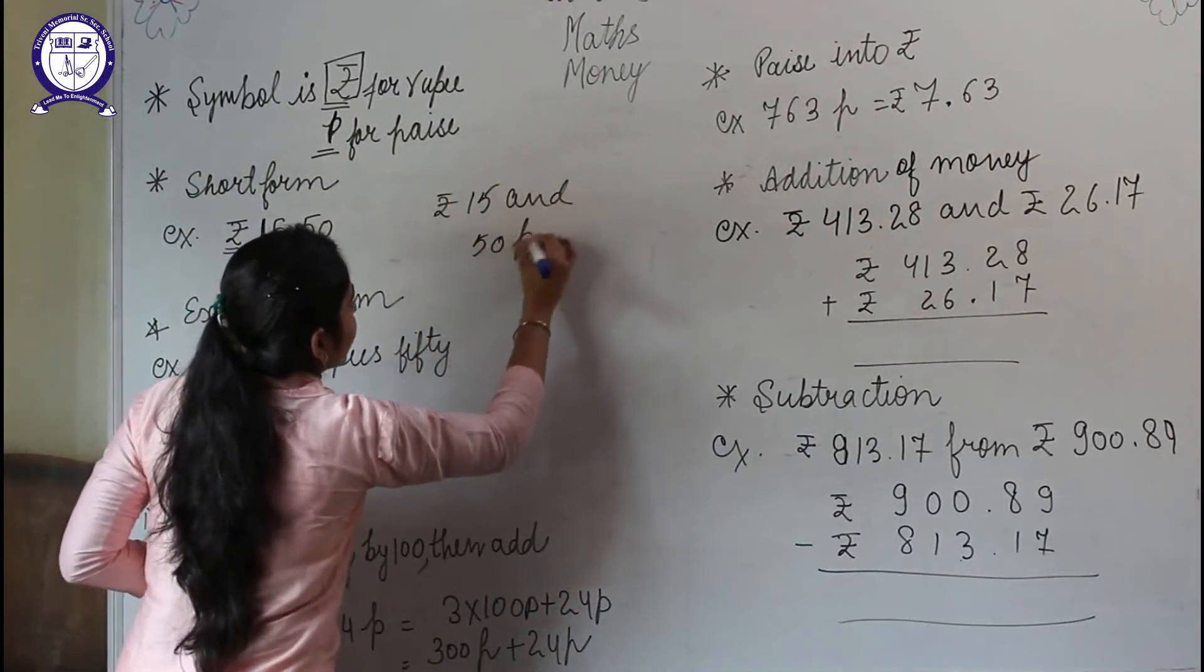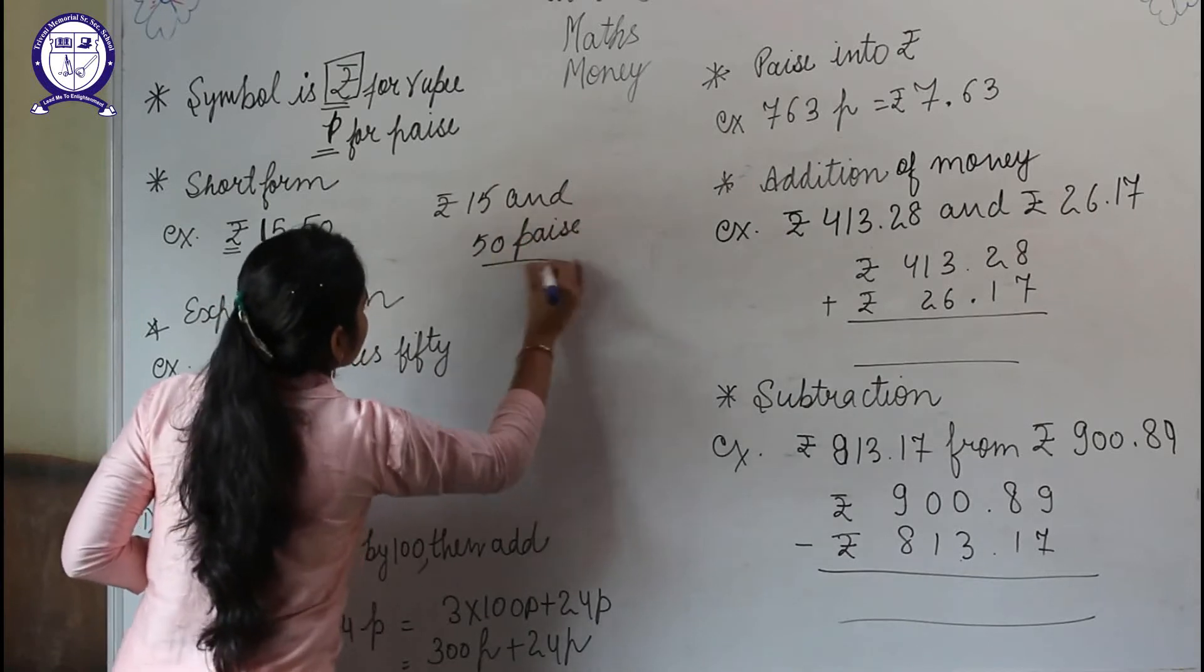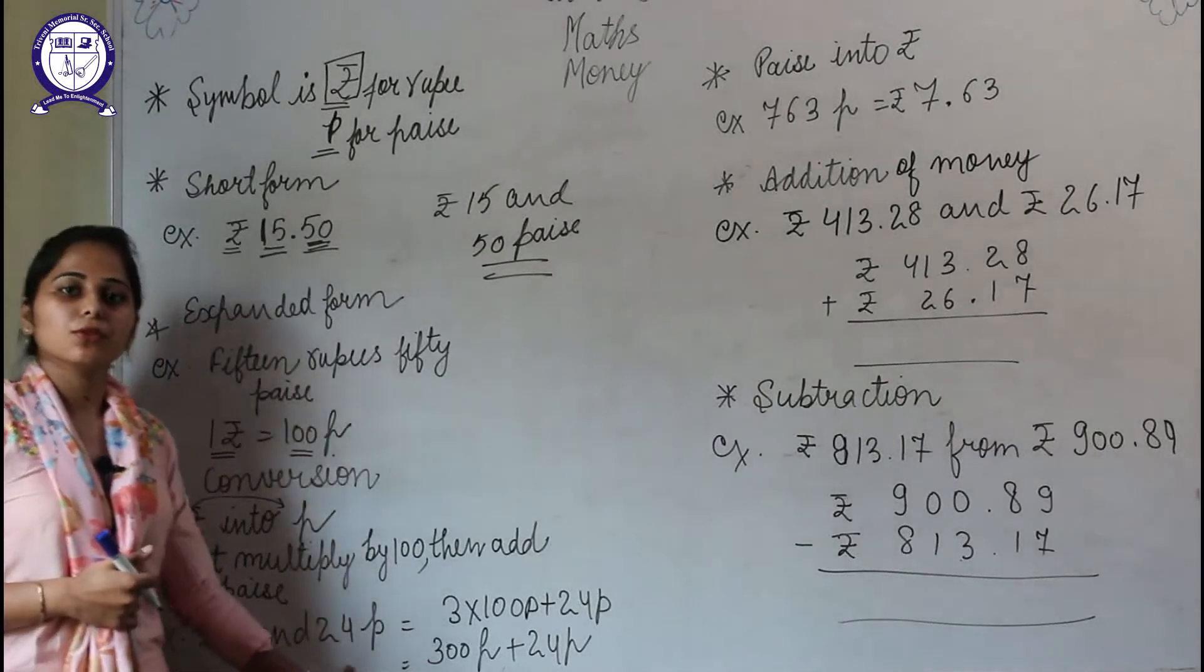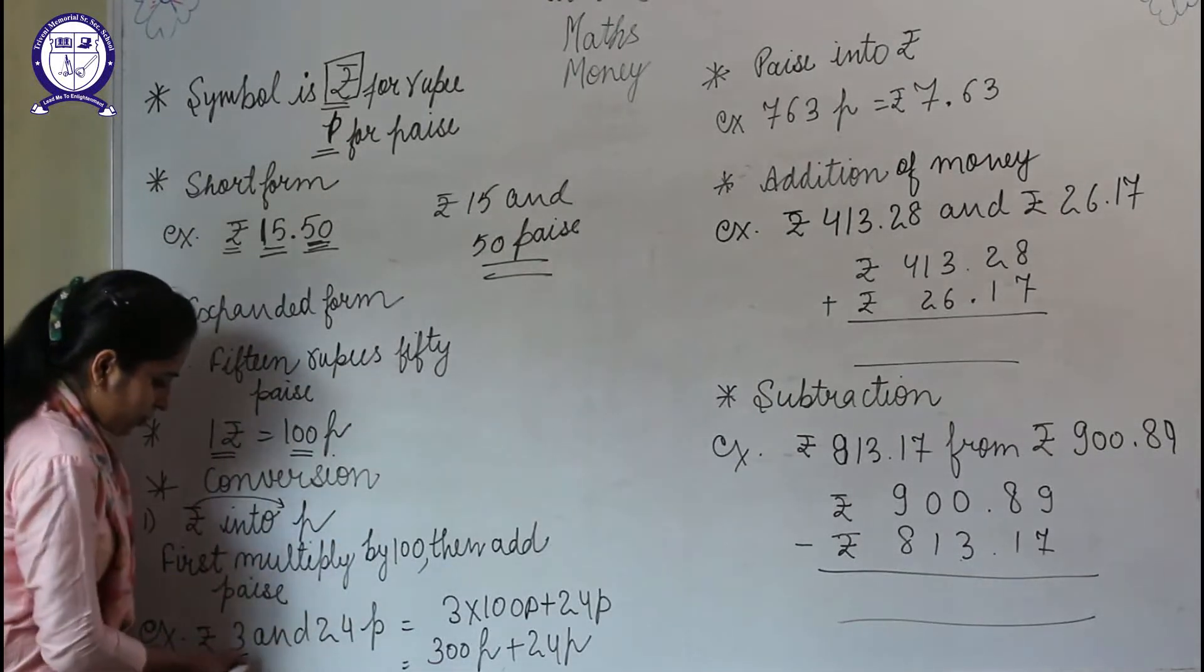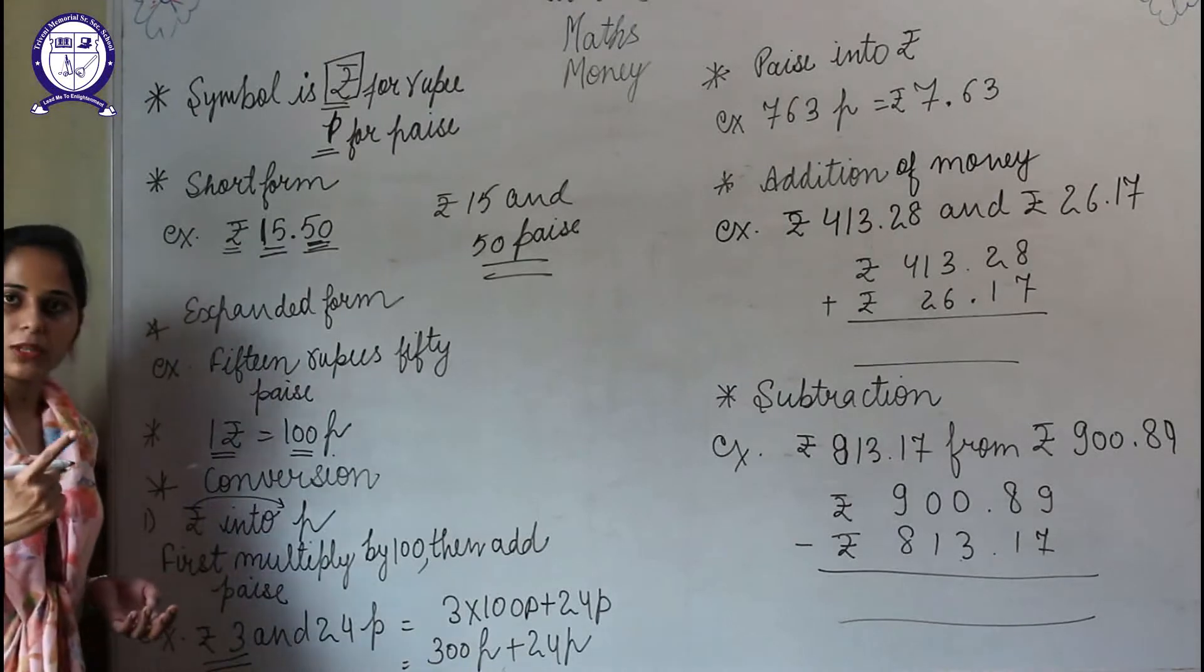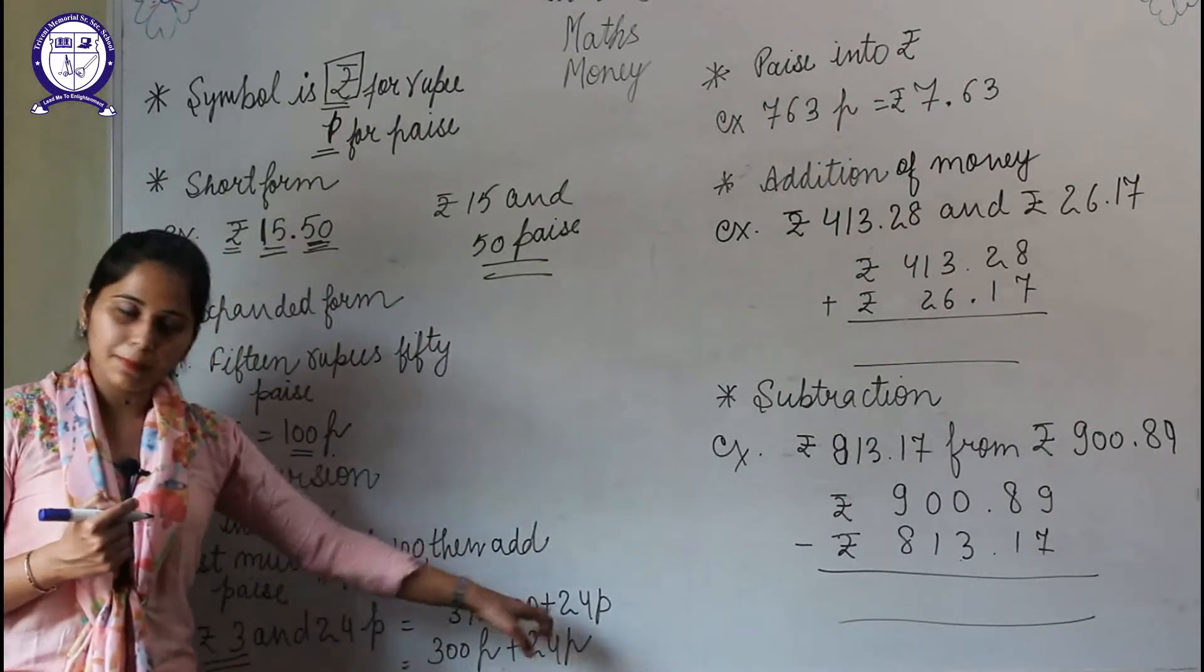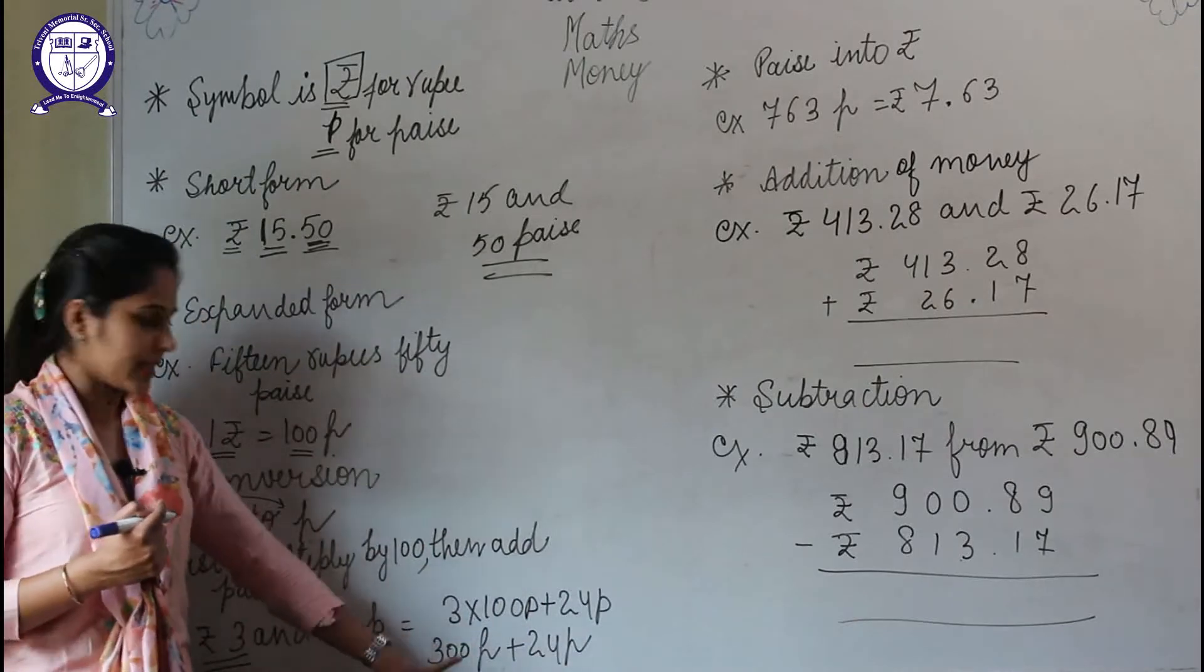paise—this is also the expanded or word form. Now, ₹3 and 24 paise, we need to convert this number into paise. We'll convert rupees into paise. 1 rupee equals 100 paise, so 3 rupees will equal 3 multiply 100 paise, which means 300 paise, and we will